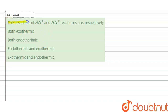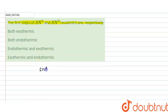The question says: the first step of SN1 and SN2 reactions are respectively... and the options are: both exothermic, both endothermic, endothermic and exothermic, or exothermic and endothermic. Let's see the solution.